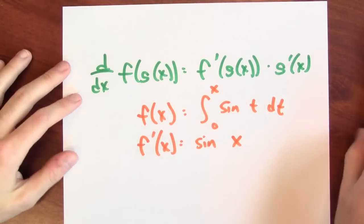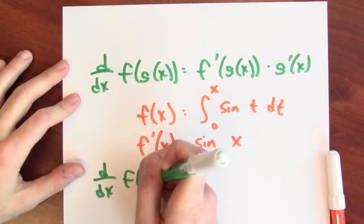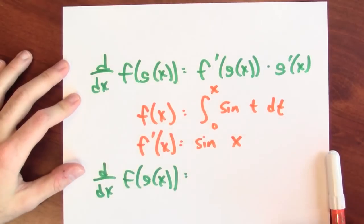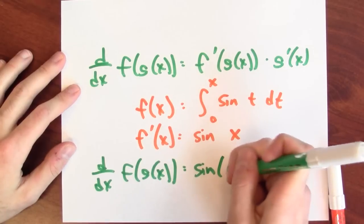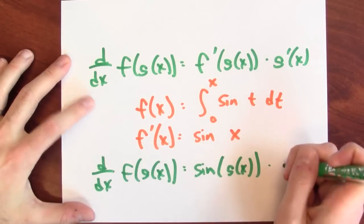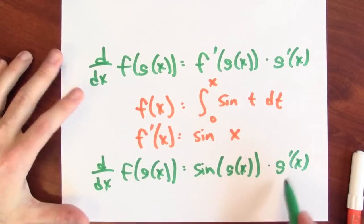And that means that the derivative of f of g of x is just sine, the derivative of f, at g of x times the derivative of g.